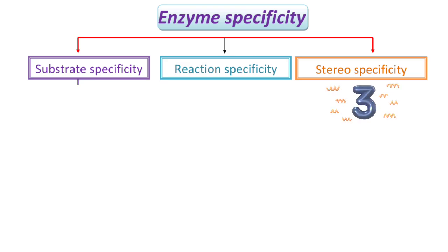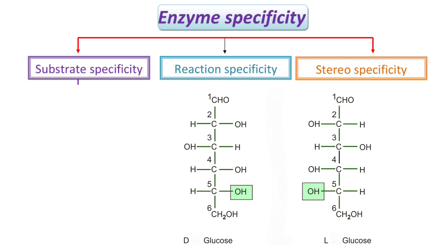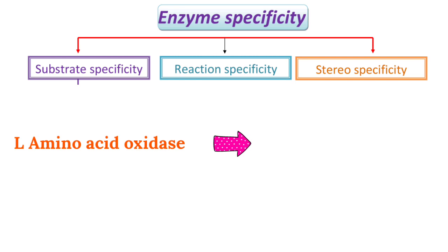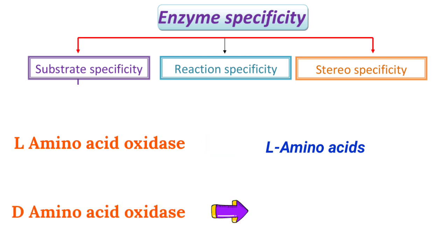Now coming to the third and last type of enzyme specificity, that is stereospecificity. Stereoisomers are compounds which have the same molecular formula but differ in structural configuration. Enzymes showing stereospecificity act only on one type of isomer. For example, L-amino acid oxidase acts only on L-amino acids, whereas D-amino acid oxidase acts only on D-amino acids.